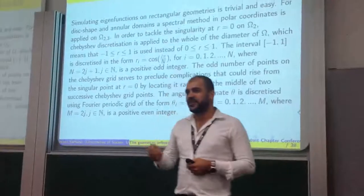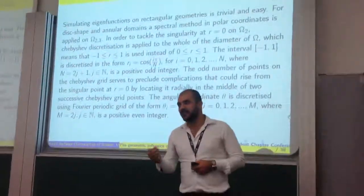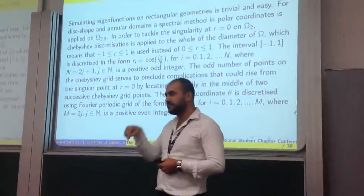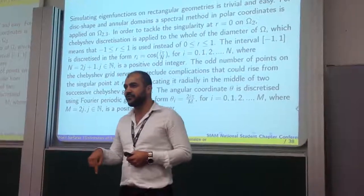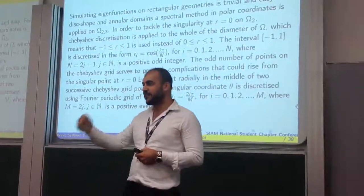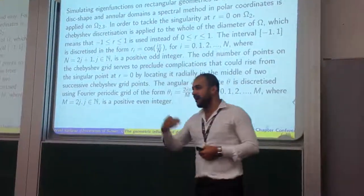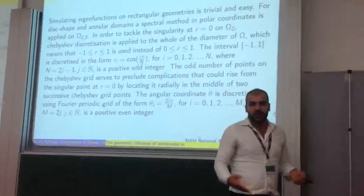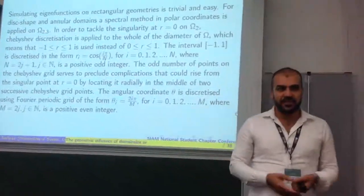Your Chebyshev gridding is set up in a way that, as it reaches the singular point r equals zero, it jumps over it — the next grid point is after r equals zero — so you never land at r equals zero.